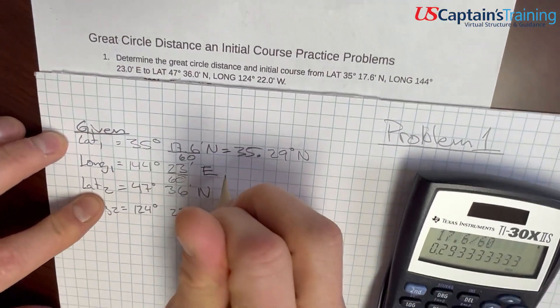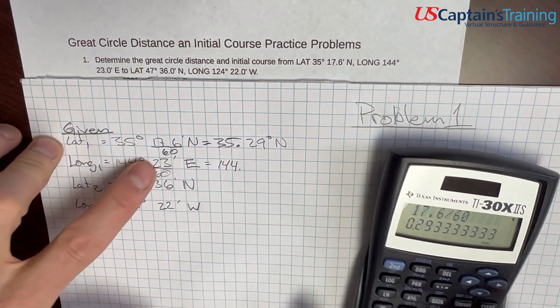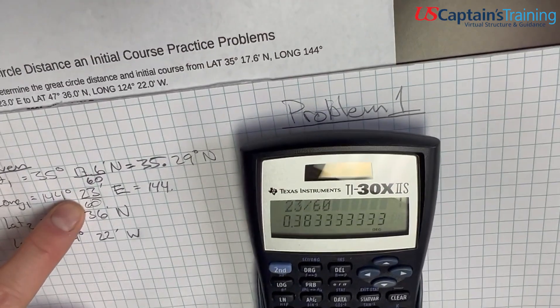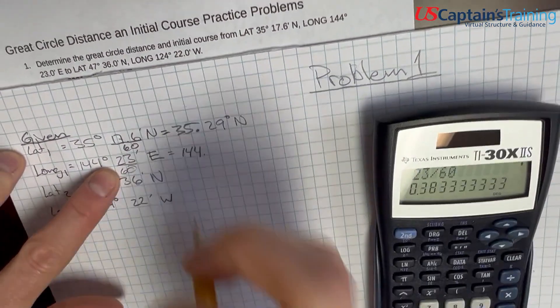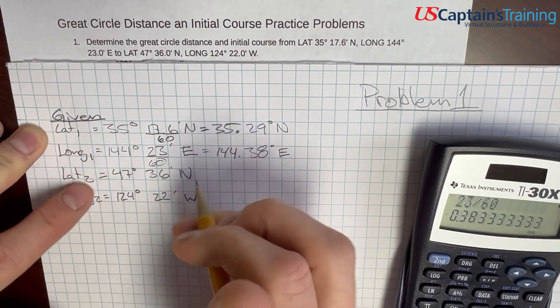So, we get 17.6 divided by 60 equals 0.29. So, 35.29 degrees north. That's our lat 1. We just keep going like this. 23 divided by 60 equals 0.38, 144.38 degrees east.